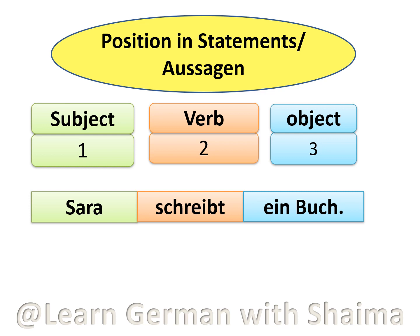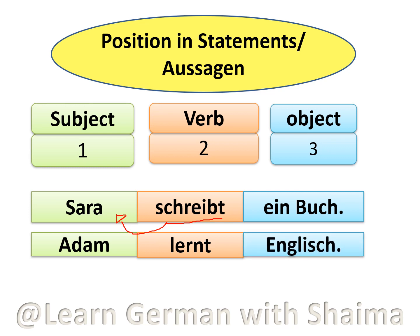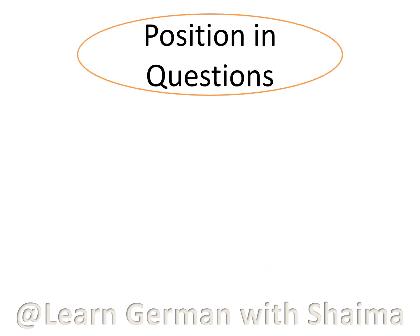Remember, you always have to conjugate the verb according to the person who is speaking. It is she, singular, that's why third person singular — so schreibt. Sarah schreibt ein Buch. Another example: Adam lernt Englisch. Again, Adam is the subject in the first position, lernt is the verb in the second position, and Englisch — the object or extra information — is in the third position.